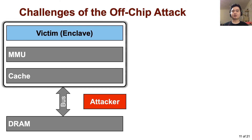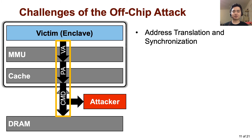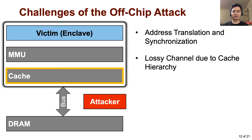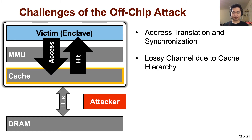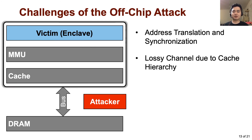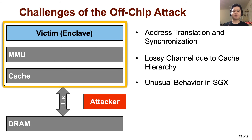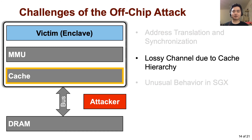We found several challenges for Membuster. First, there are multiple layers of address translation between the victim and the DRAM commands we observe, requiring synchronization of multiple traces and reverse translation to obtain the victim's virtual address. Second, the attacker may not see most of the memory access pattern because of the cache hierarchy — a large amount of memory access will hit the cache, so the attacker may observe only a small number of cache misses. This is especially challenging because modern processors usually have a large last-level cache of up to a few megabytes. There are also unusual behaviors of SGX that need to be handled. In this talk, I will focus on how we address the second problem; for other details, please refer to our paper.